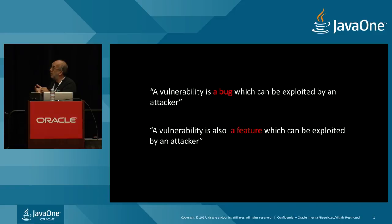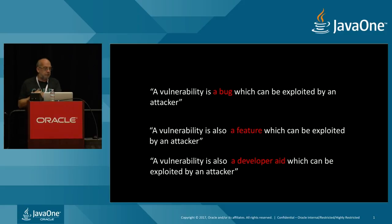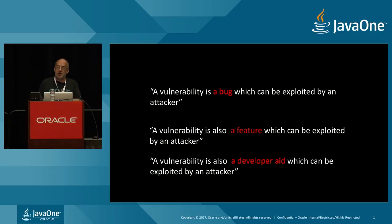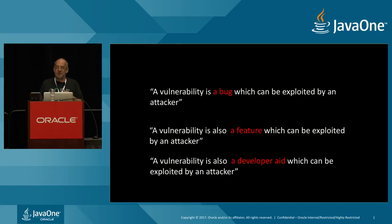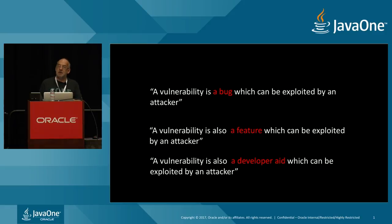So we've got to add to our list: a vulnerability is a bug, a feature, and also a developer aid. If you are helpful to yourself in your code, you run the risk of being helpful to attackers. It's the little things that wire together that do that. When you're thinking about being helpful, think about the downsides of the information you're sharing — because it's little things like that that let people in.